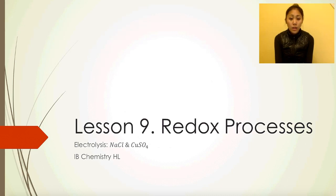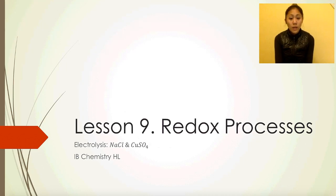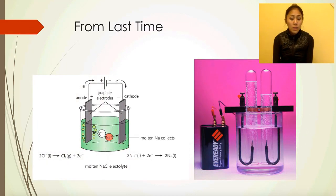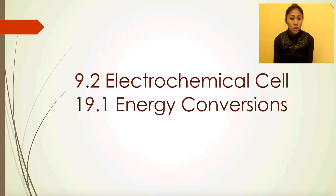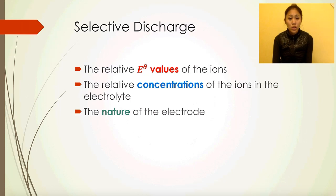In lesson 8, we looked at electrolysis of water as an example of selective discharge with respect to standard electrode potential values of ions. Today, sodium chloride and copper sulfate relate to concentration and nature of electrode. From last time, we looked at molten sodium chloride electrolyte with respect to water.